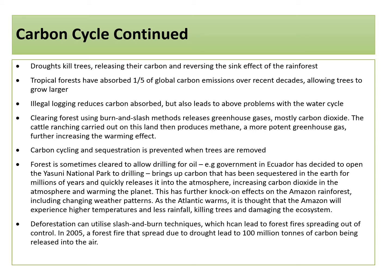As the Atlantic warms, it is thought that the Amazon will experience higher temperatures and less rainfall, killing trees and damaging entire ecosystems. Deforestation can utilise slash and burn techniques, which can then lead to forest fires spreading out of control. In 2005, a forest fire that spread due to drought led to 100 million tonnes of carbon being released into the air.